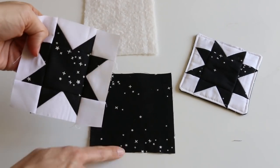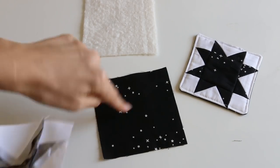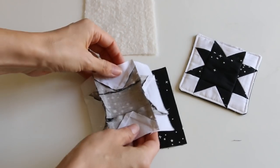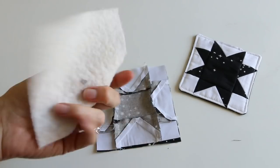And then you need a backing which is the same size. These are four and a half inches square, so we have our backing and then our star. We're going to place those right sides together. And then you need a scrap piece of batting.